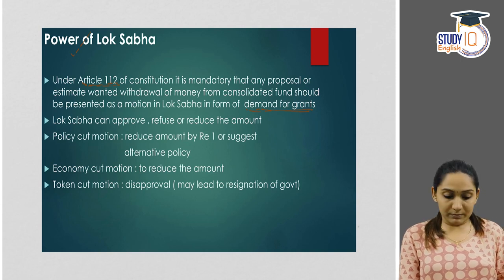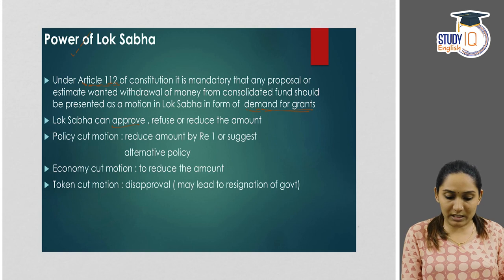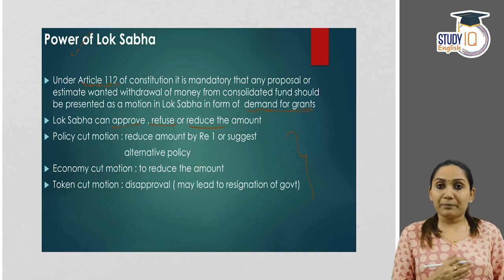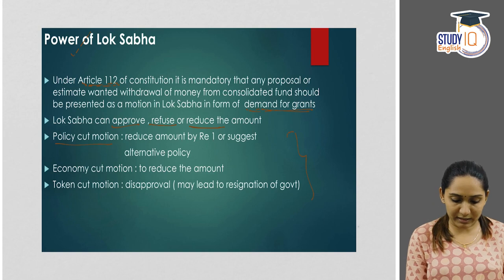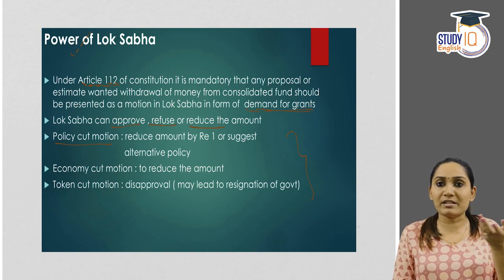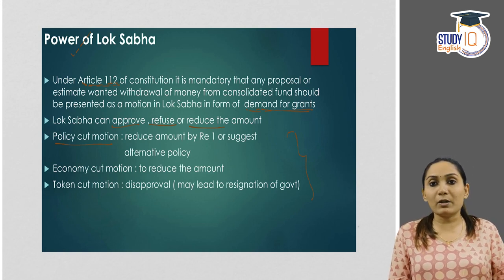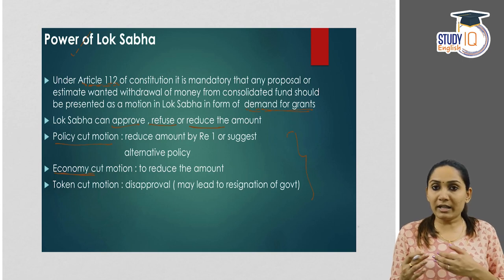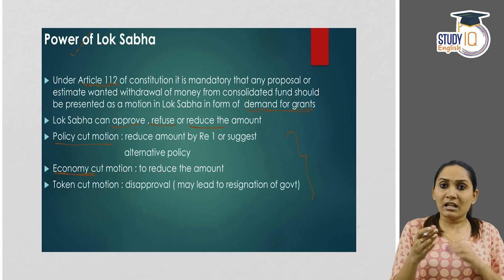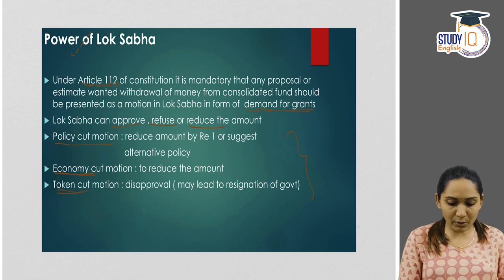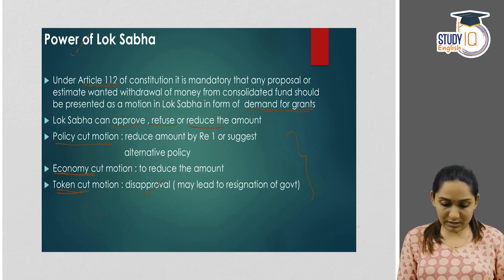With regard to demand for grants, the Lok Sabha can either approve it, refuse it, or reduce the amount. While reducing the amount, there are three types of cut motions. First is the policy cut motion — reduce the amount by one rupee — which signals that the policy needs to be changed. Second is the economy cut motion, which means to rationalize the expenditure by cutting the proposed amount. Third is the token cut, which represents disapproval by the parliament and may lead to the resignation of the government.